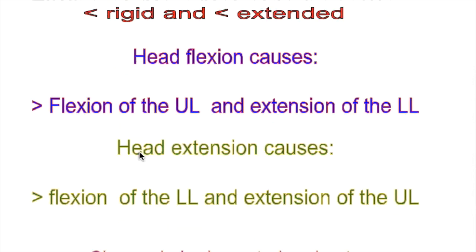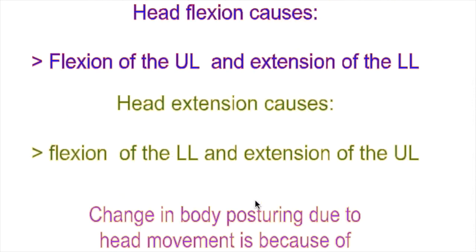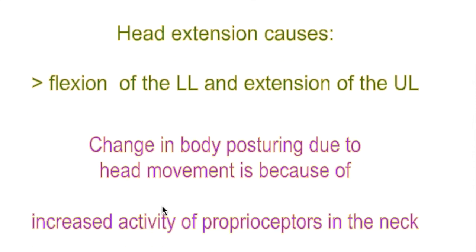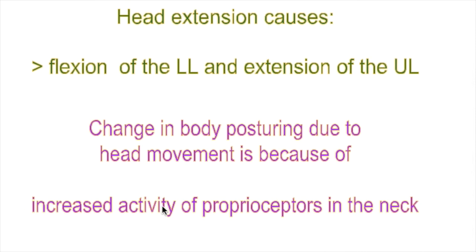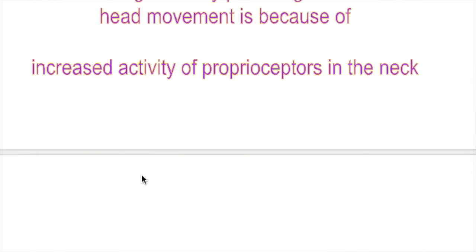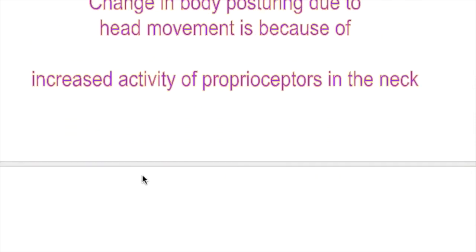Head extension is exactly opposite to head flexion — it causes more extension of the upper limb and flexion of the lower limb. These changes in body posture due to head movement are due to increased activity of proprioceptors in the neck.